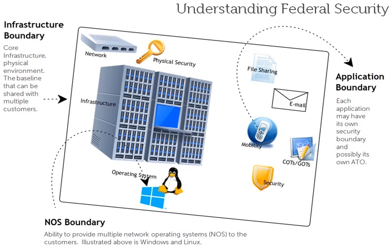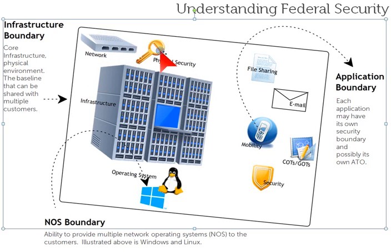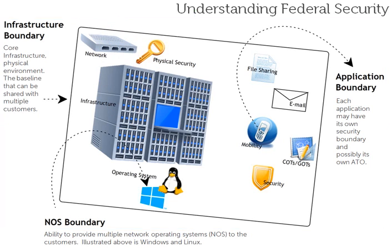In the infrastructure boundary, we have our core components. We have things like your network, your physical security, and your infrastructure - things like your servers, network, as well as the physical security. Dependent upon the security level, it may mean guns, gates, and guards, or some derivative thereof. So this is the core infrastructure.